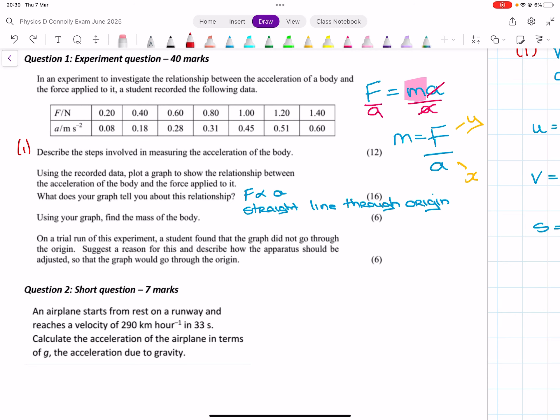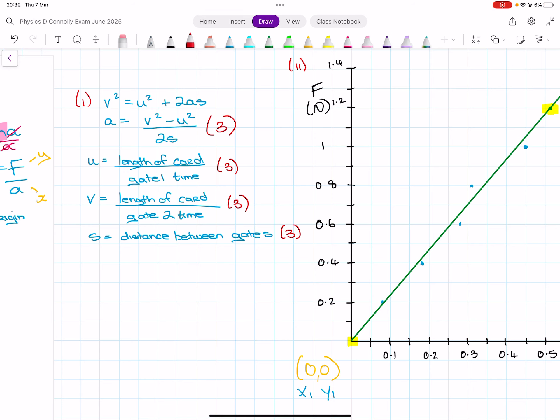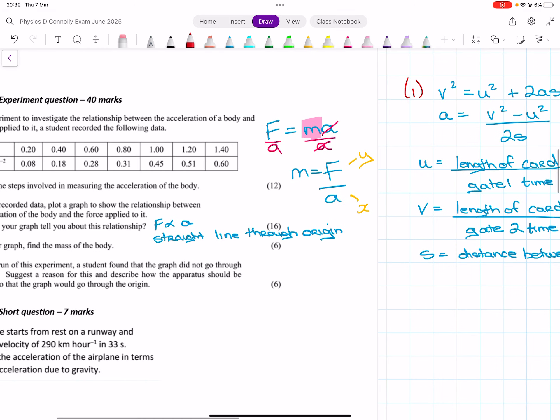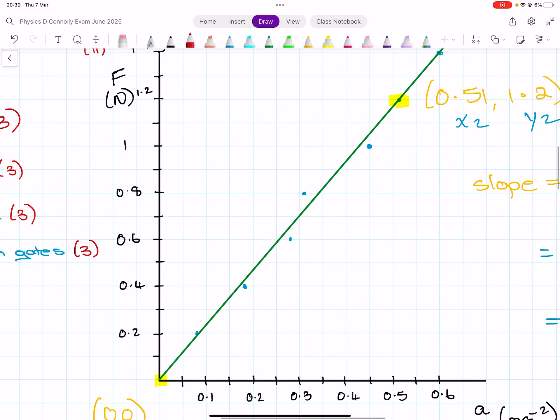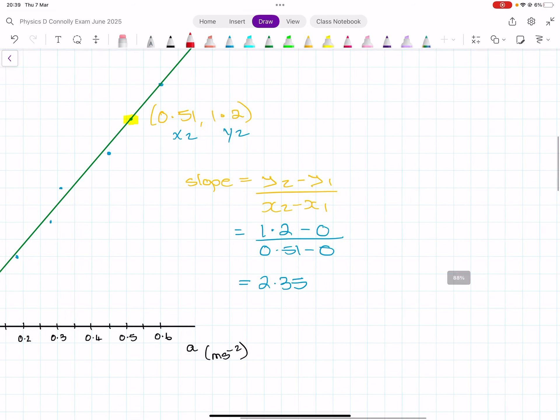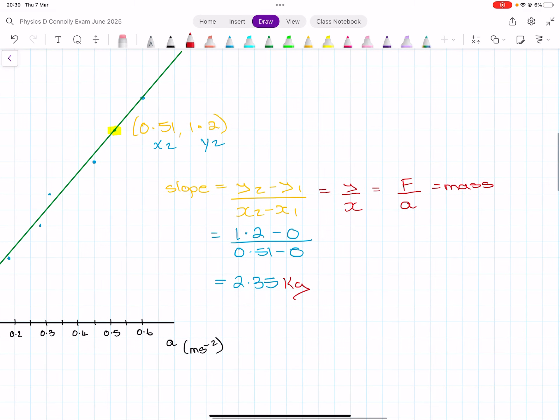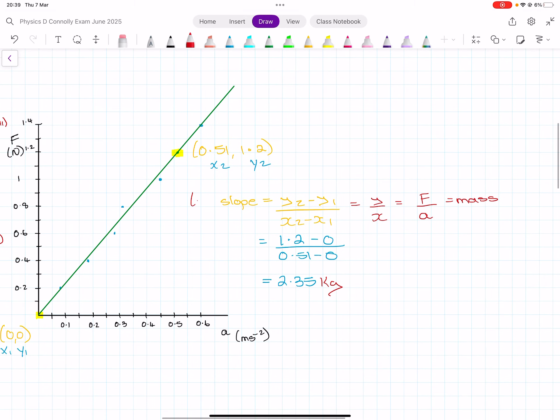I kind of skipped on. So, the graph is part 2. Part 3, I've already done. Use your graph to find the mass. So, I drew the graph in such a way that the slope was the mass. So, the slope put the y-axis over the x-axis. The y-axis is the force. The x-axis is the acceleration. So, that gives me the mass. So, that 2.35 is 2.35 kilograms, which is my mass.